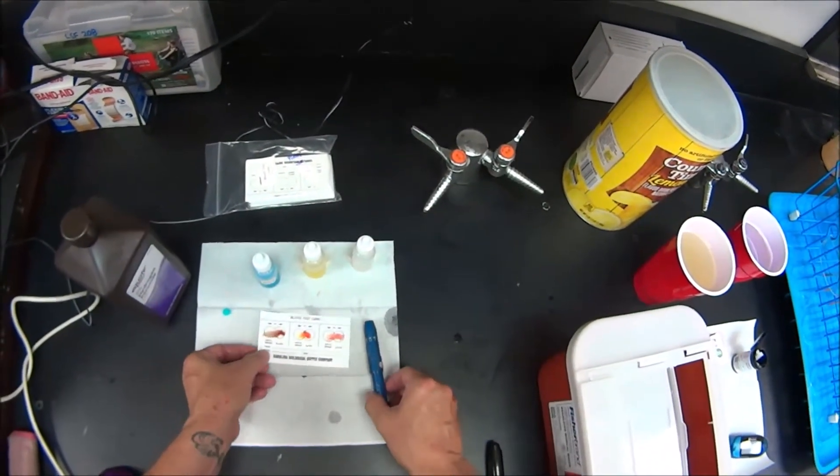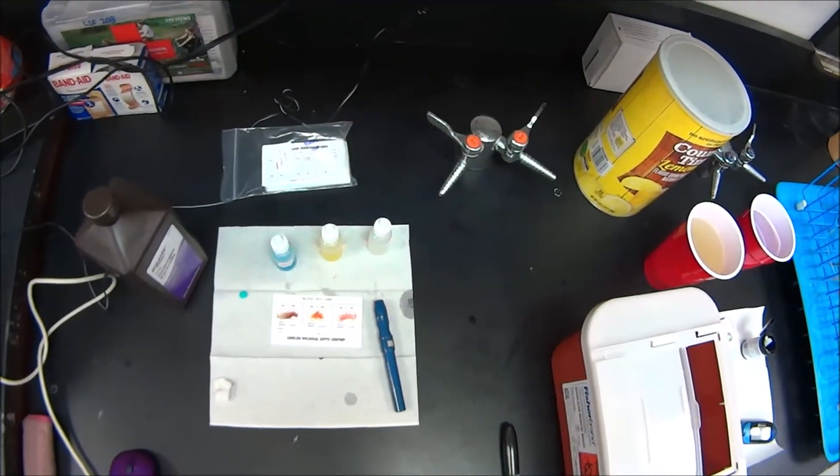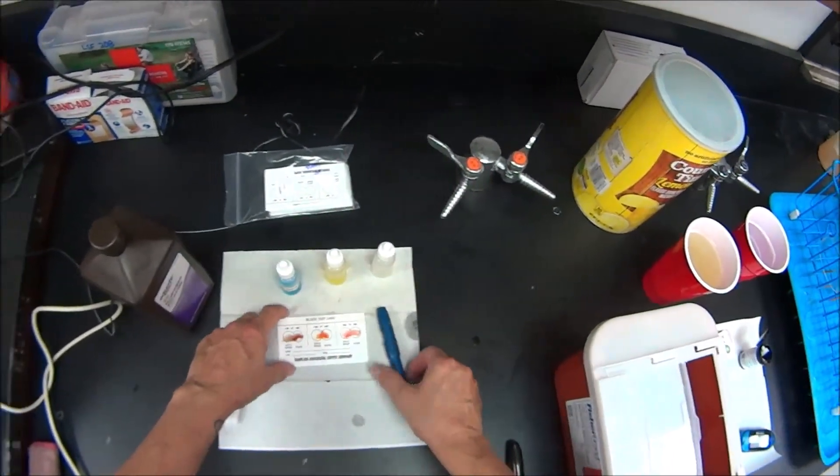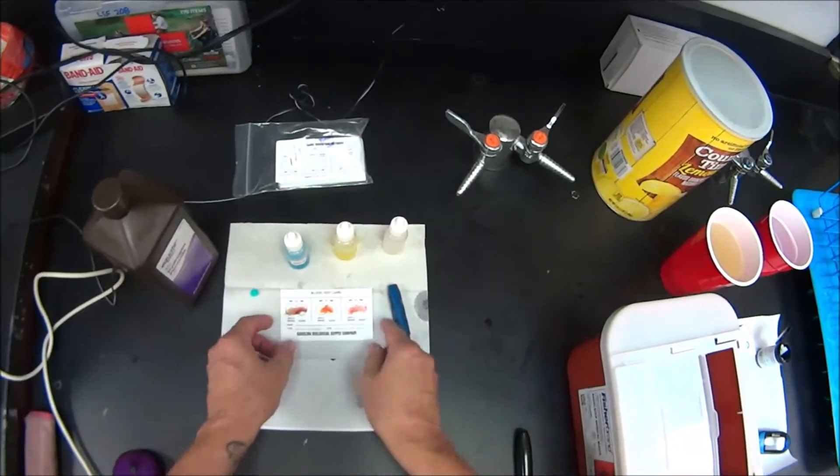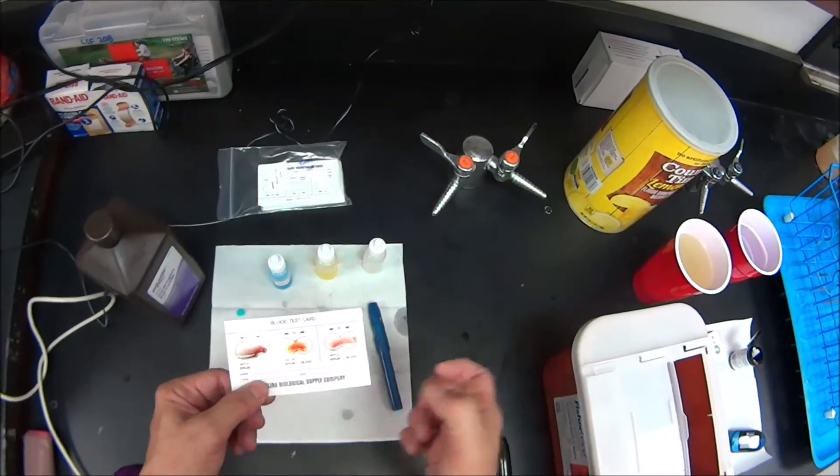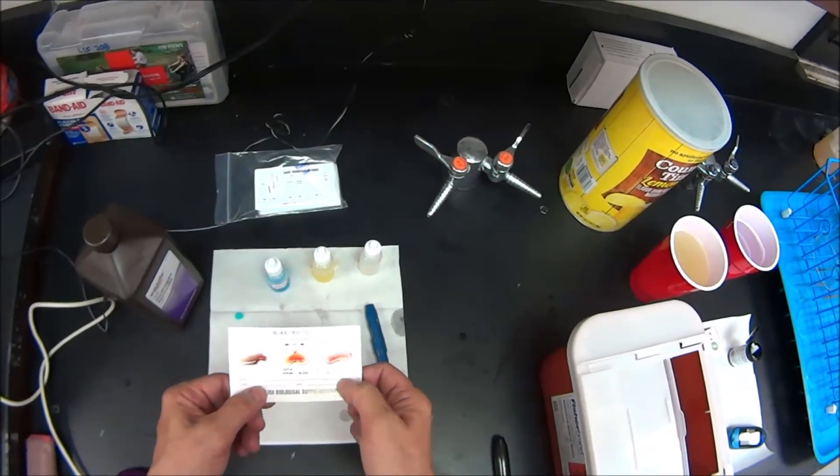Do you know what blood type that makes you if you lack both of those antigens? You're going to have to answer what blood type that is as part of your blood typing questionnaire. So again, no agglutination in A, no agglutination in B, but I have agglutination in the Rh well.